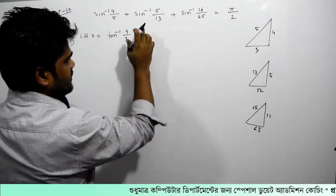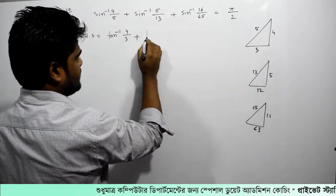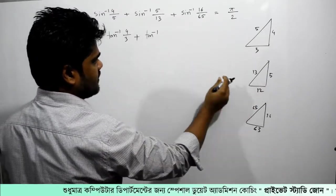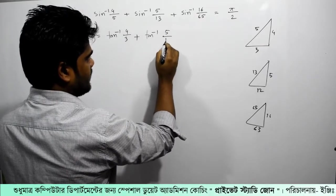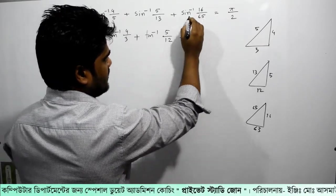Plus sin inverse, the other one is tan inverse 5 by 12, plus this is...